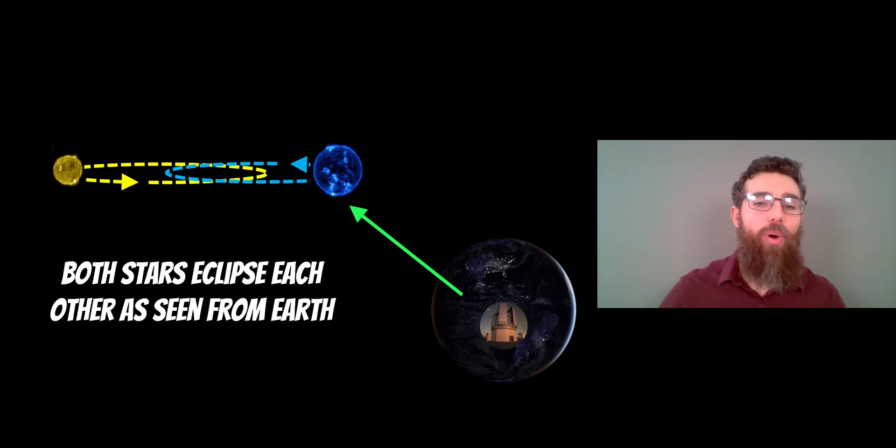An eclipsing binary system is one that contains two stars. They're orbiting a common center of mass and as viewed from Earth, they appear to pass in front of one another, which is why we call them an eclipsing binary star system.